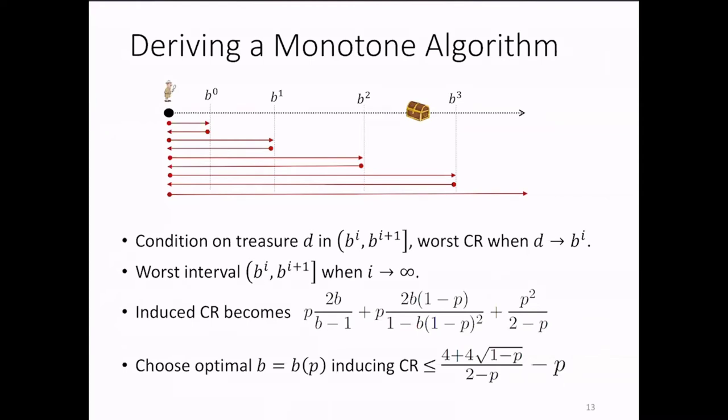on that the treasure is between any two consecutive turning points, then the worst placement is arbitrarily close to the earlier turning point. And second, one can show that the further away the treasure is the worst expected detection time is. And with the previous two statements, one can derive the competitive ratio as a function of p, b, and then one needs to choose the optimal b as a function of p that minimizes the competitive ratio.